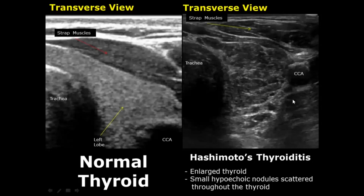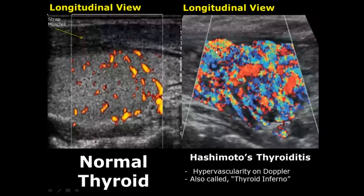Because these appearances overlap with other diseases as well, we need proper clinical correlation. On color Doppler, Hashimoto's thyroiditis gives hypervascularity. This type of appearance is called thyroid inferno.